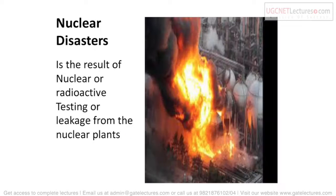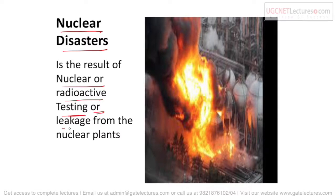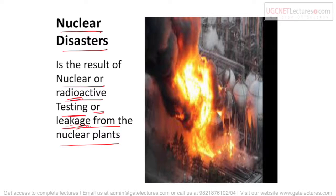The first manmade disaster is nuclear disaster. Nuclear disasters are accidents resulting from nuclear or radioactive testing or leakage from nuclear plants. When nuclear reactions or weapons testing are conducted, nuclear or radioactive radiation is released, or sometimes there is leakage from nuclear plants — that is a nuclear disaster.